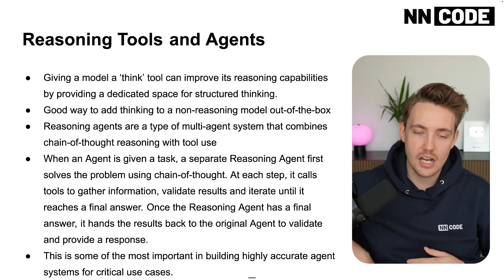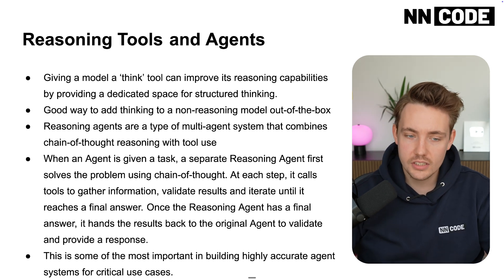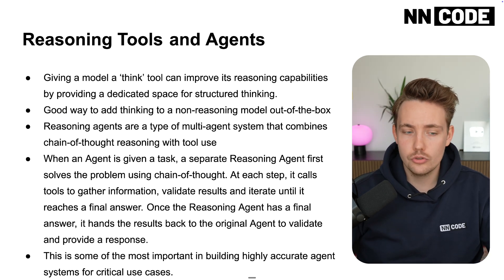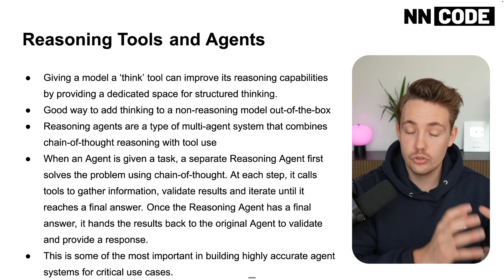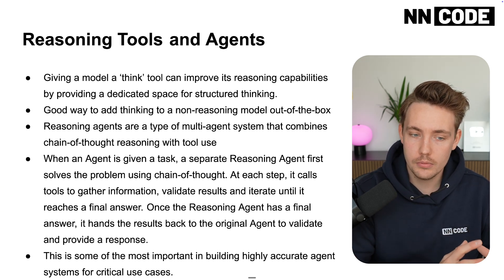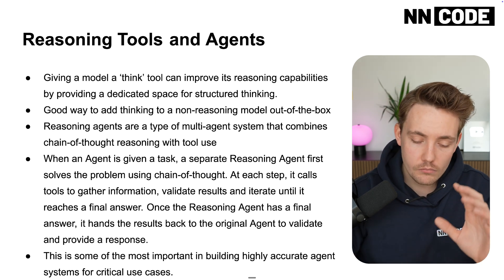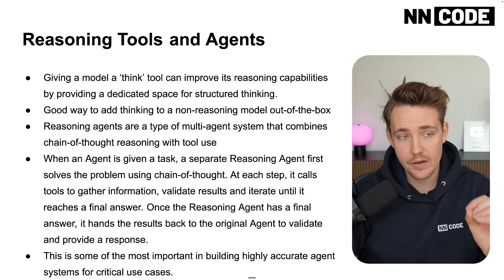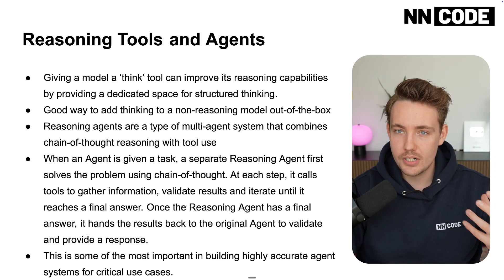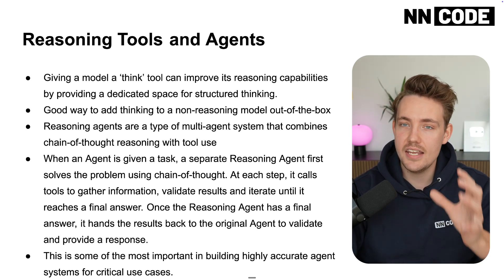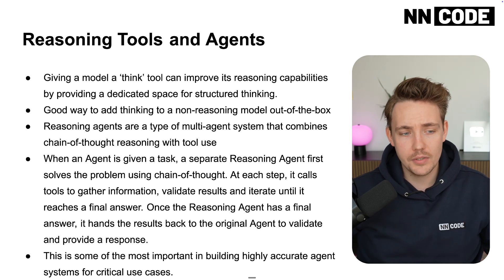This is a good way to add thinking to a non-reasoning model out of the box. Reasoning agents are a type of multi-agent system that combines chain of thought reasoning with tool use. The agent can break down which tools it needs to solve a problem. Reasoning and tool use are pretty much what makes AI agents actual agents, rather than just traditional large language models.